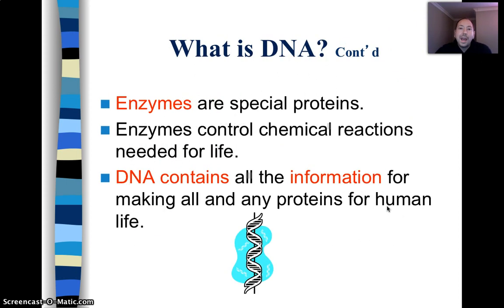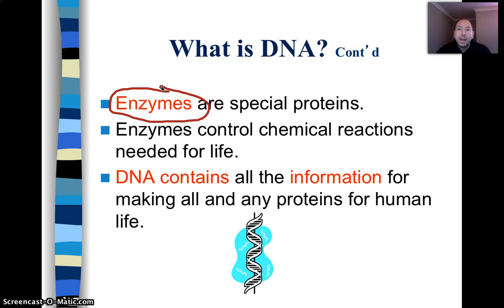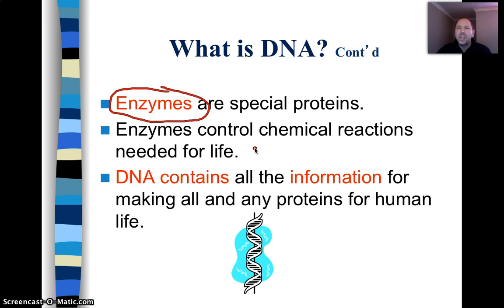DNA codes for the making of enzymes. Enzymes are those protein molecules that speed up chemical reactions. We certainly wouldn't want it to take five weeks for us to digest a hamburger bun. Enzymes speed up chemical reactions by lowering the amount of energy it takes. The enzymes control chemical reactions needed for our life, from digestion to respiration, even the copying of DNA, which we'll cover in a later video. Basically, DNA has our recipe book to make us us.